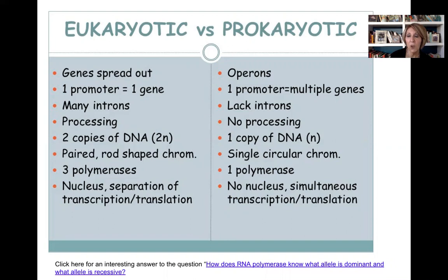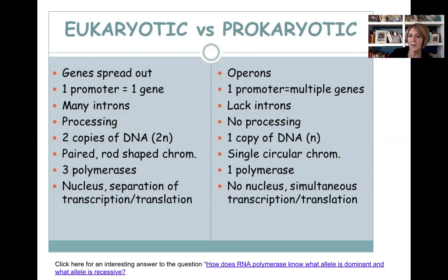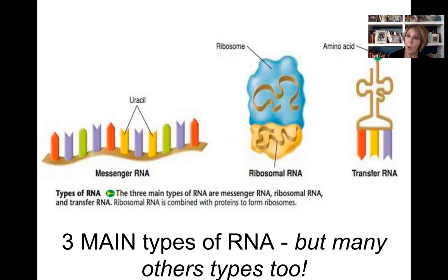This is a great summary of the differences between eukaryotes and prokaryotes so far. One thing not yet taught is the operon — how bacterial genes are organized to turn genes on and off — which we'll cover in the next chapter. So far we've mainly discussed messenger RNA, but now we'll talk about ribosomal RNA and transfer RNA, the other two big players in the translation part of our central dogma.